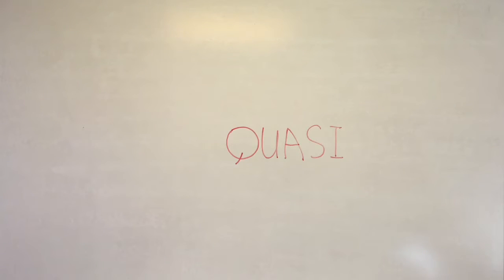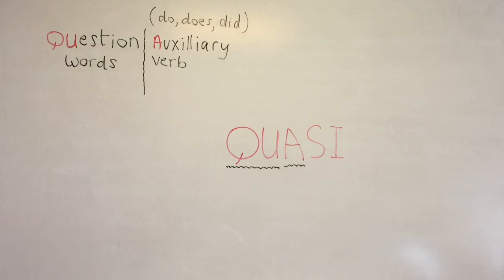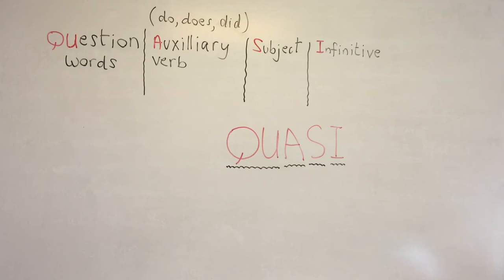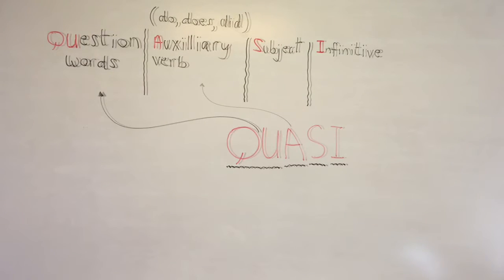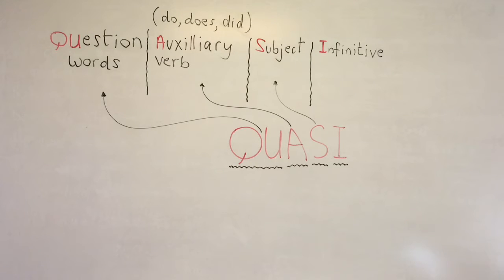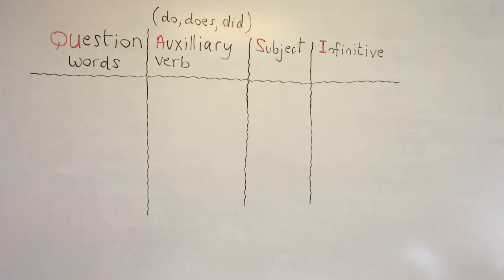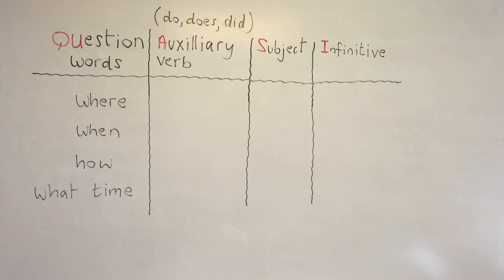First, let's look at QUASI: Question word, Auxiliary verb, Subject, Infinitive. Here are some examples. On the left we have our question words: where, when, how, what time.